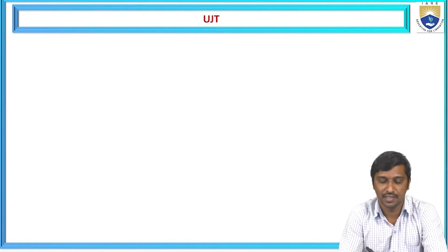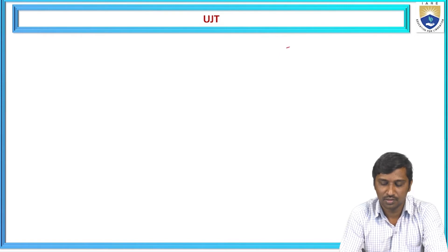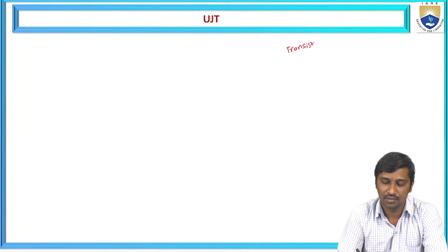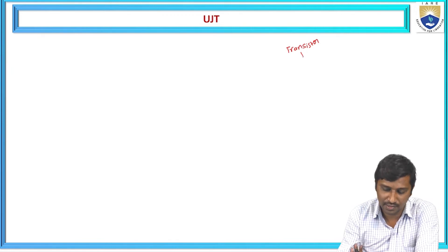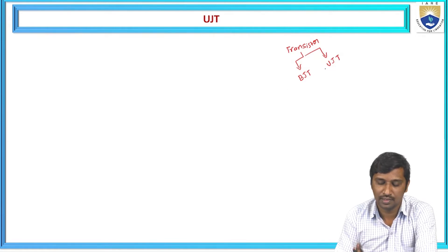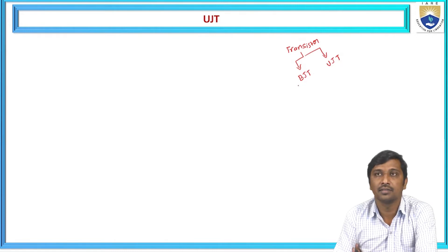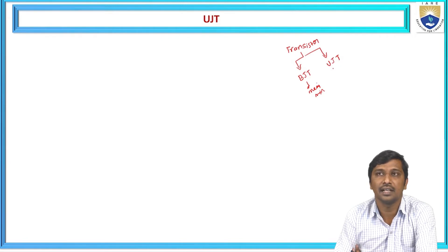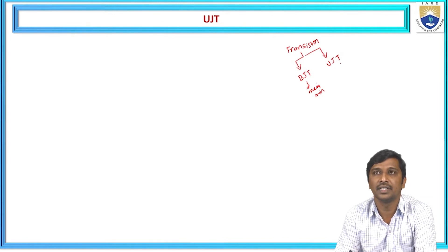UJT means transistor — a device that transfers from a low resistance to a high resistance. We have two types of transistors: one is the bipolar junction transistor, and another is the unijunction transistor. Also, there is the field effect transistor. In a BJT, conduction depends on both charge carriers — majority as well as minority — whereas in a UJT, conduction depends only on majority charge carriers.